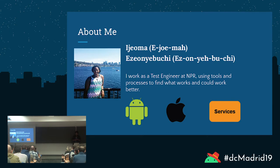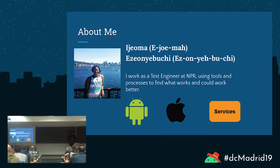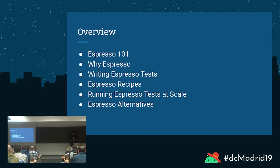My name is Idroma Esonyebuchi. You can probably tell that I have no type of Spanish accent — I am from the States. I work in Washington DC at NPR, which is National Public Radio. I work as a test engineer and have for the past four years, working on tools and processes to make our mobile testing better from CI and also automated testing for Android and iOS.